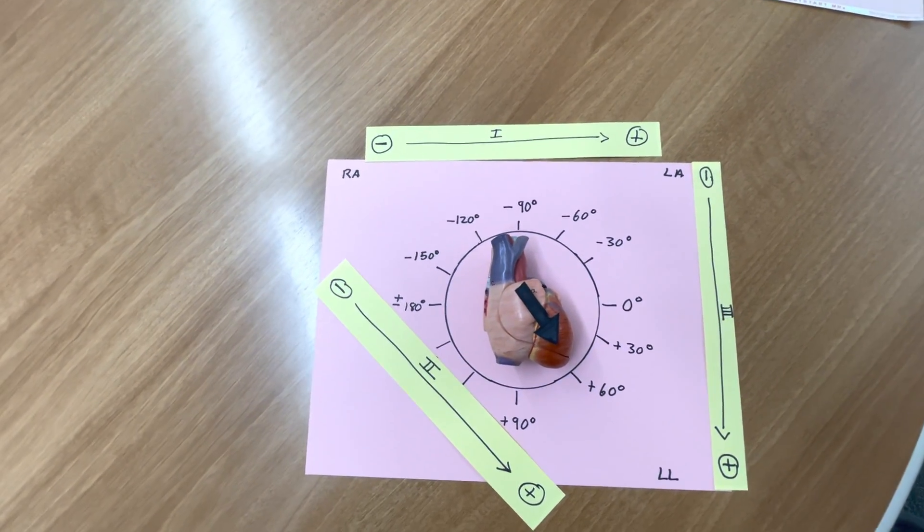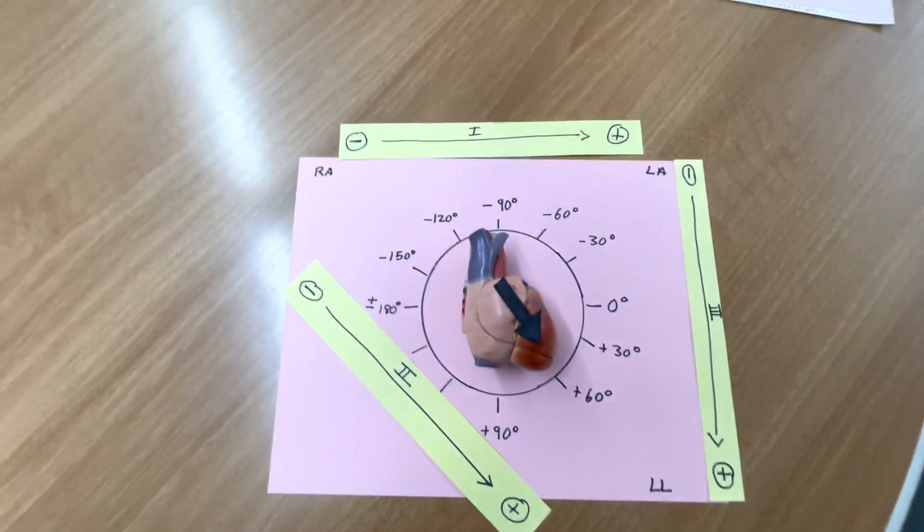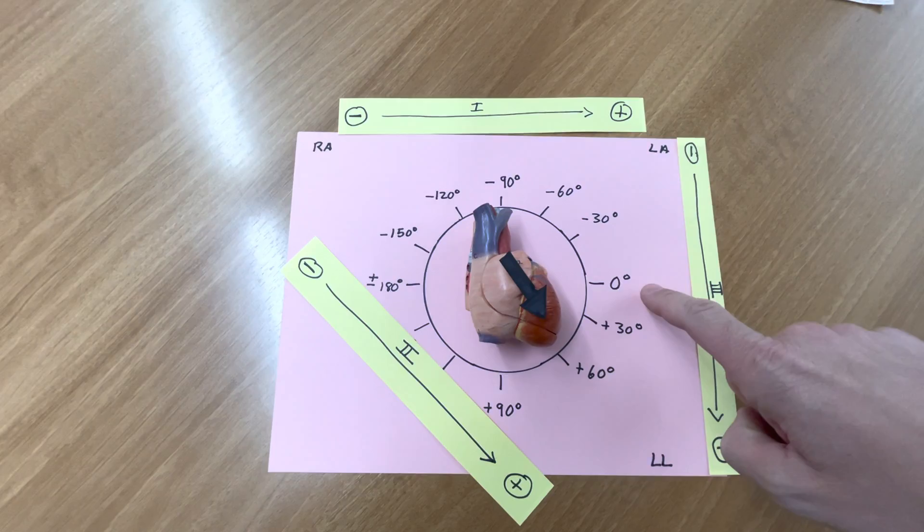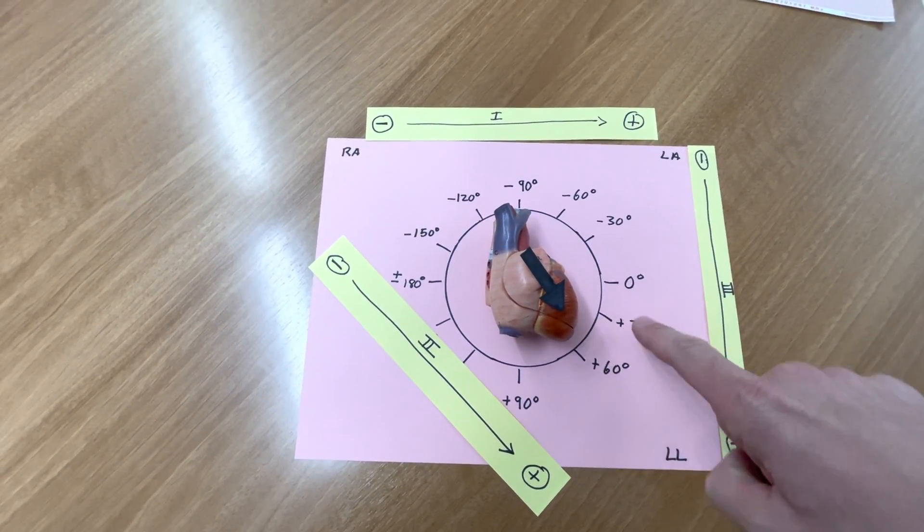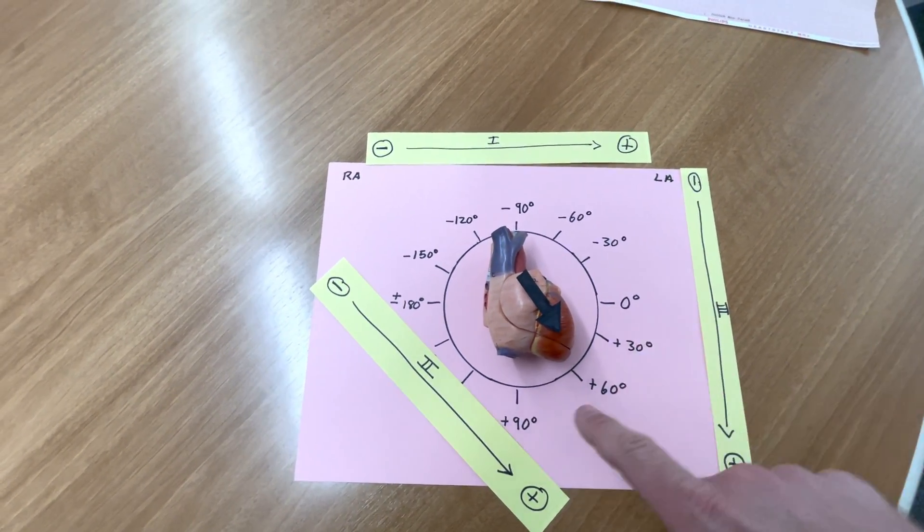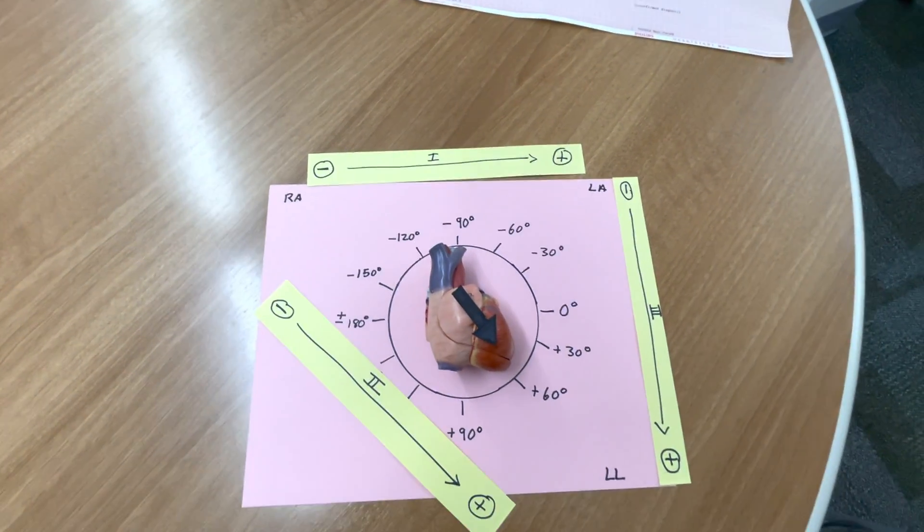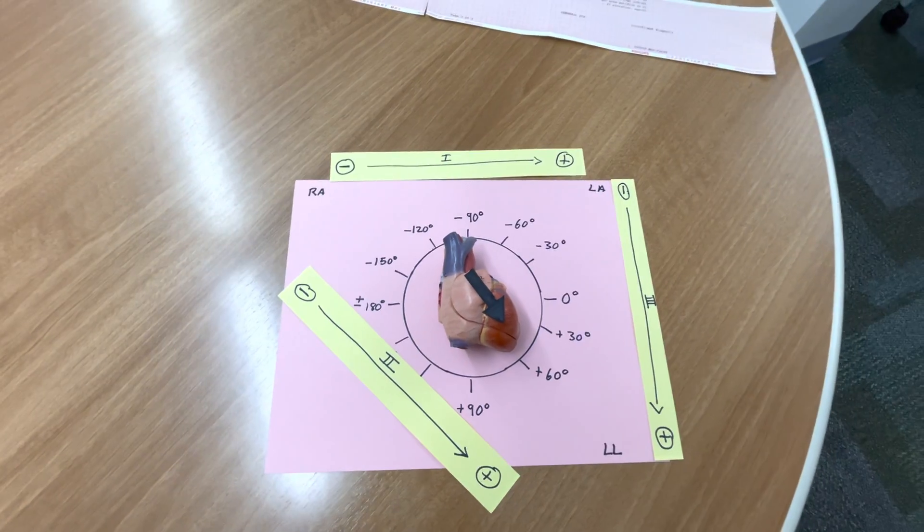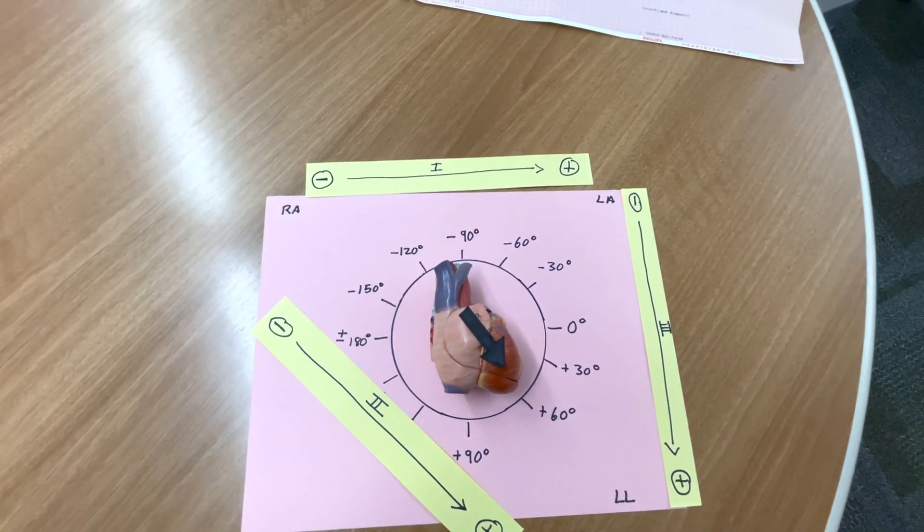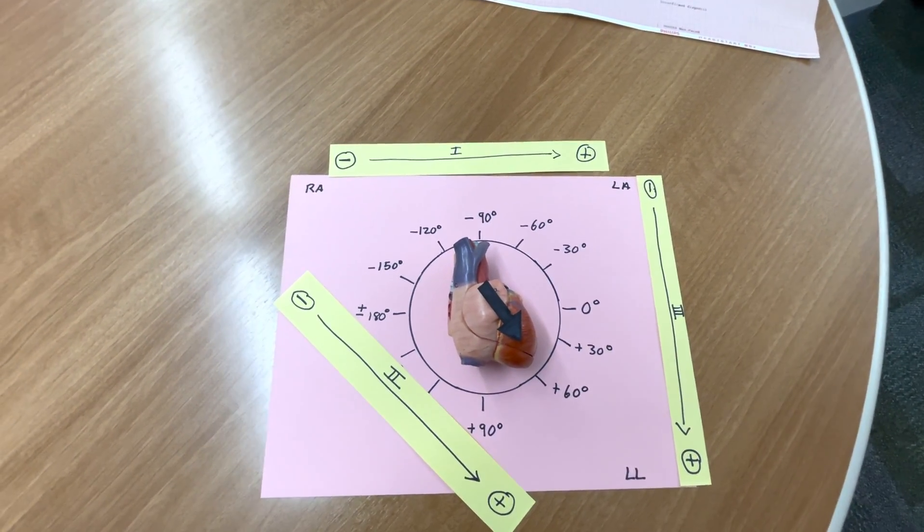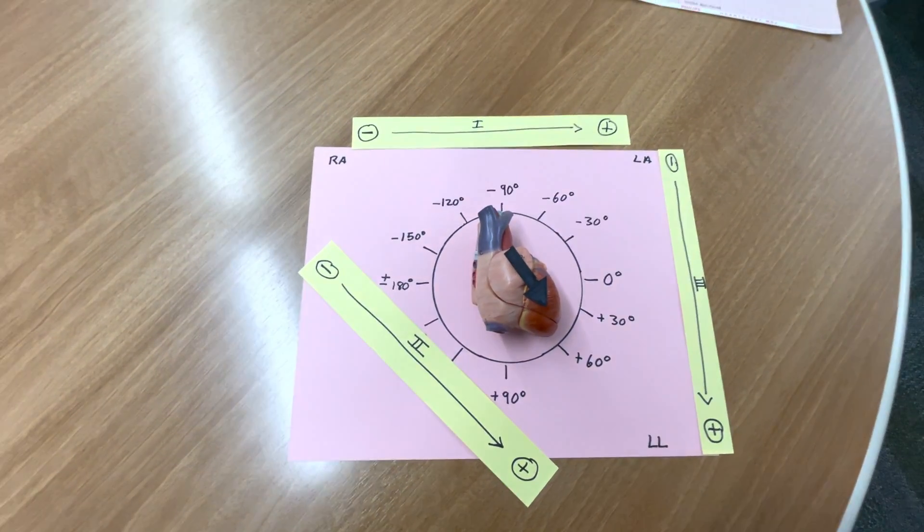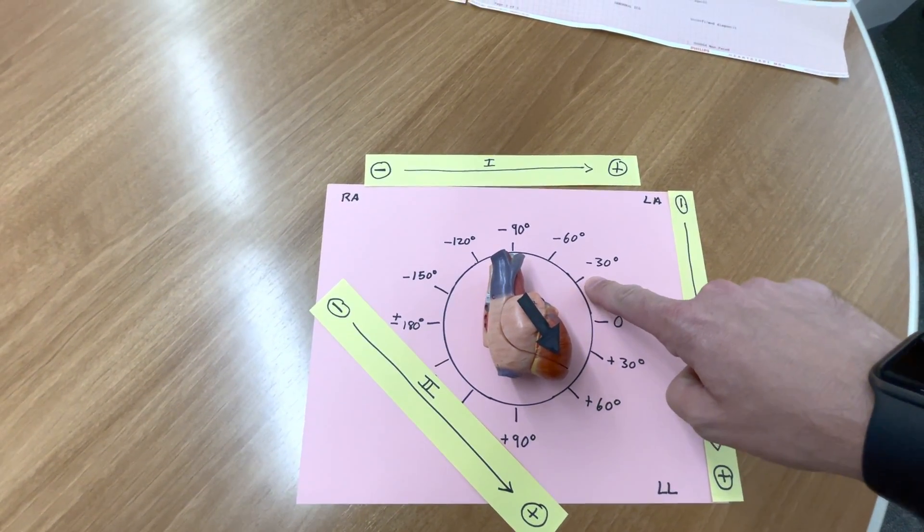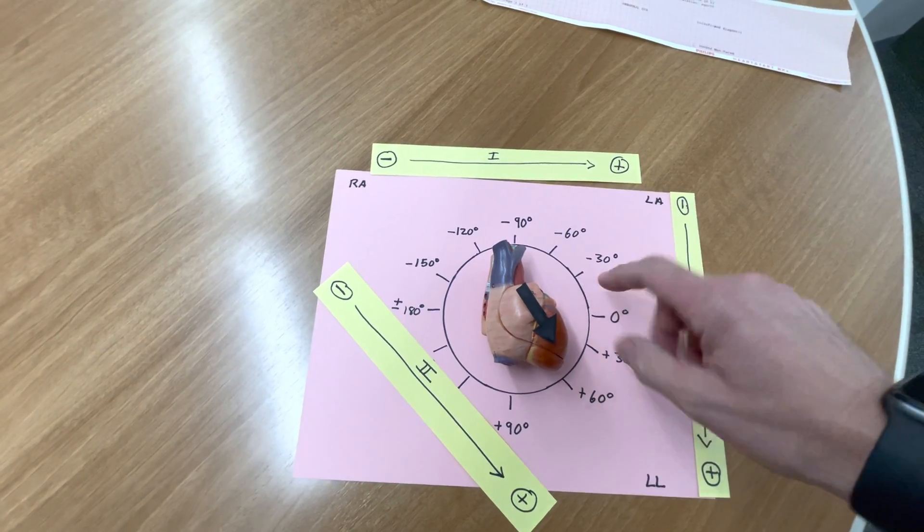Normal axis is generally considered 0 to plus 90 degrees. So, that arrow is going from 0 to plus 90 degrees. Anywhere in this range is considered normal. All three QRSs will be upright in the limb leads.